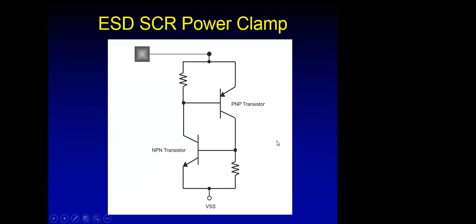Another example of a power clamp: some people use silicon controlled rectifiers not just as input ESD protection, but also as power clamps for the power grid. This is actually more common than using them on input circuits. Depending on technology and tuning of these devices, success levels varied.